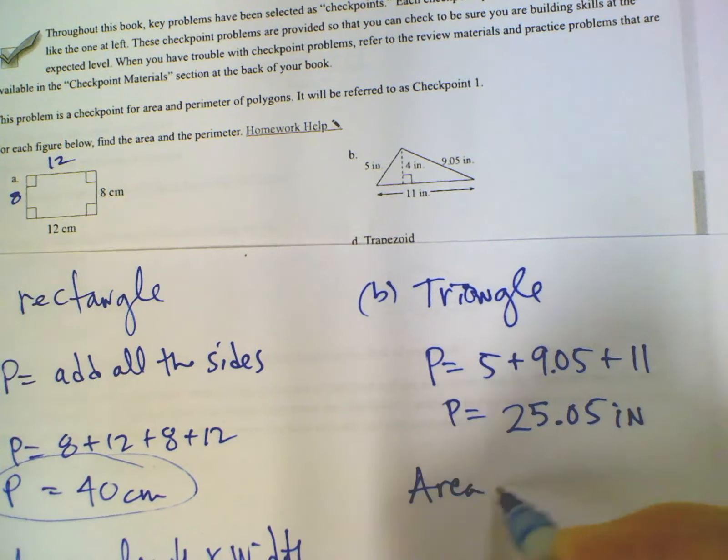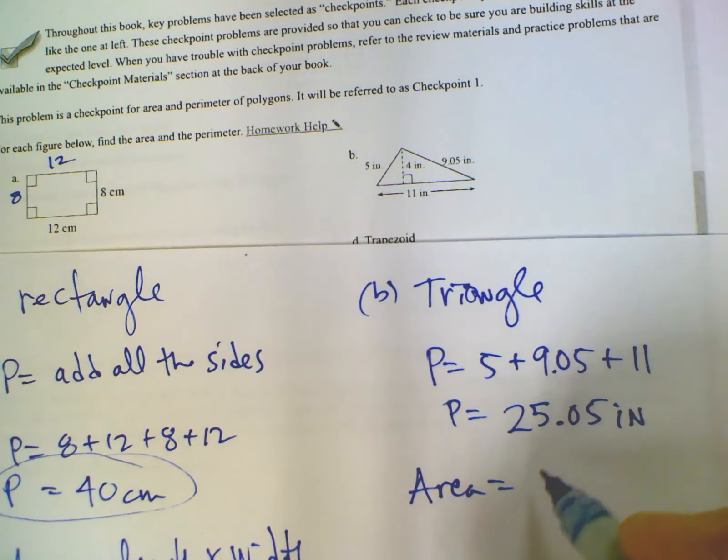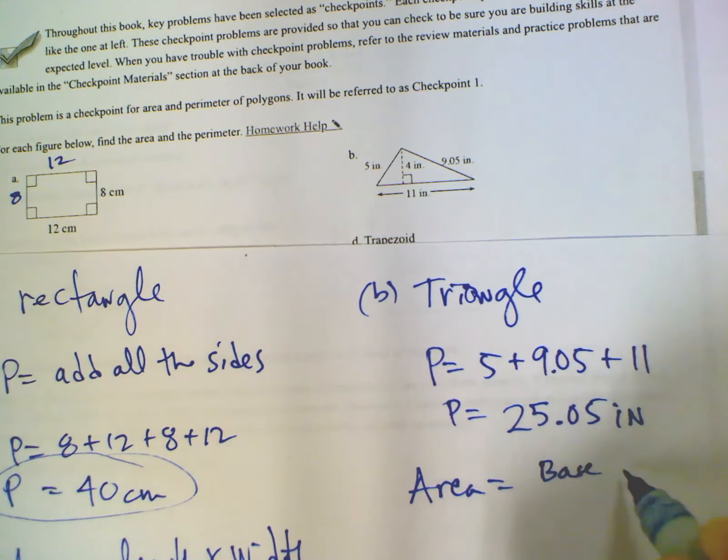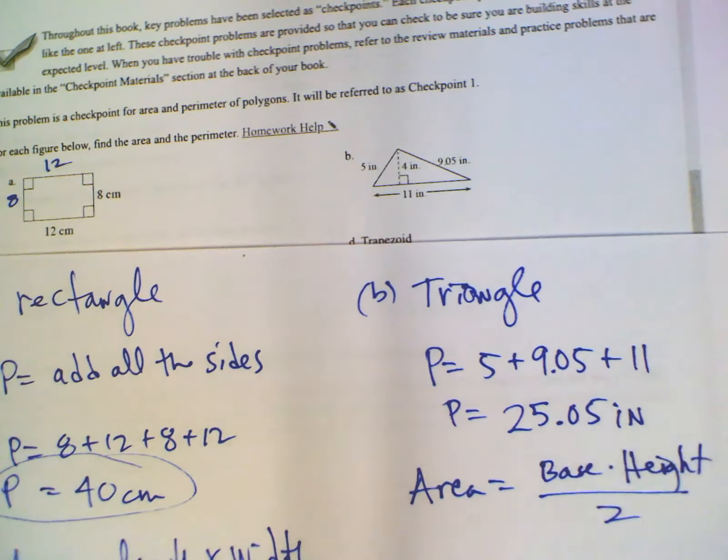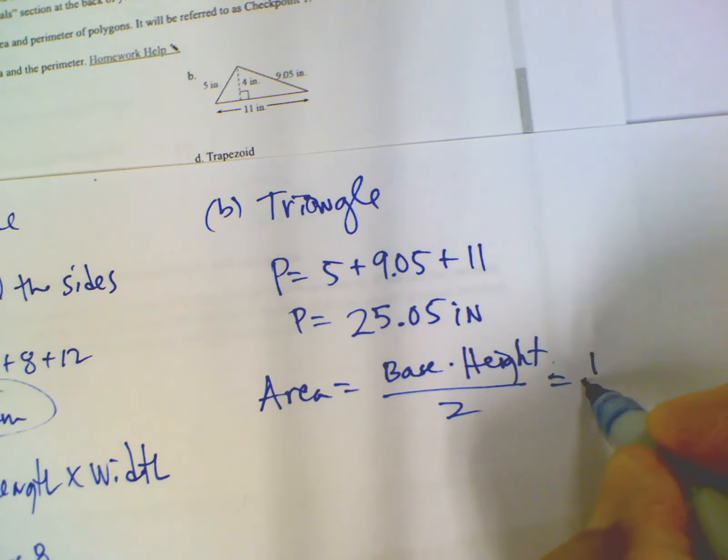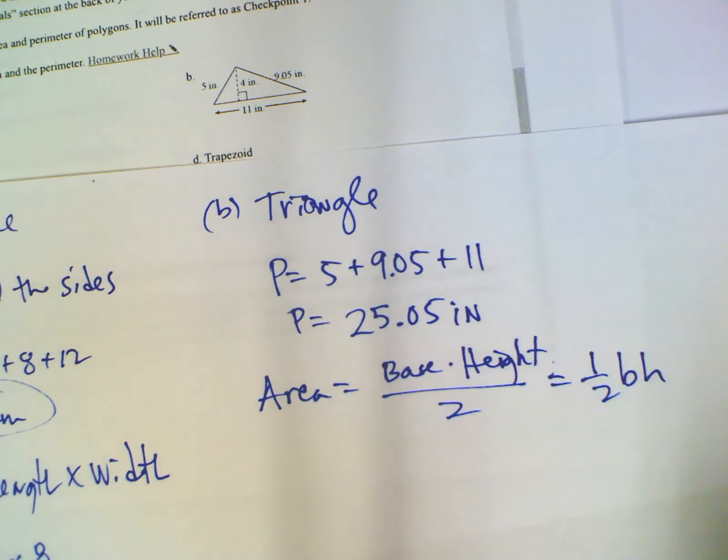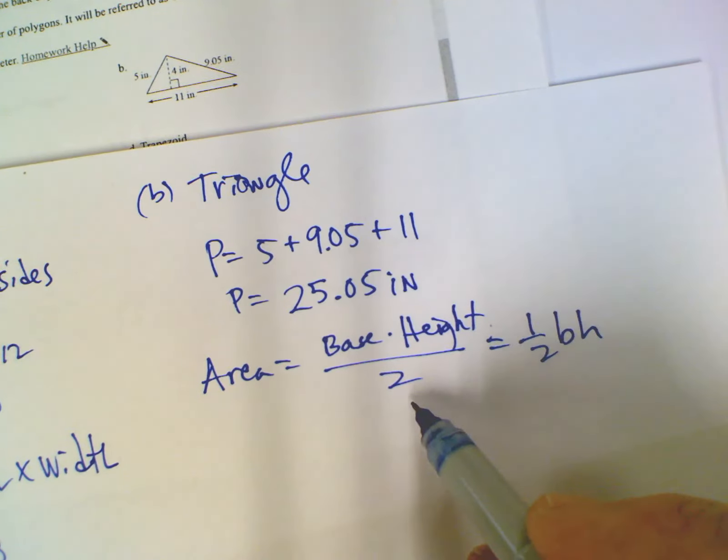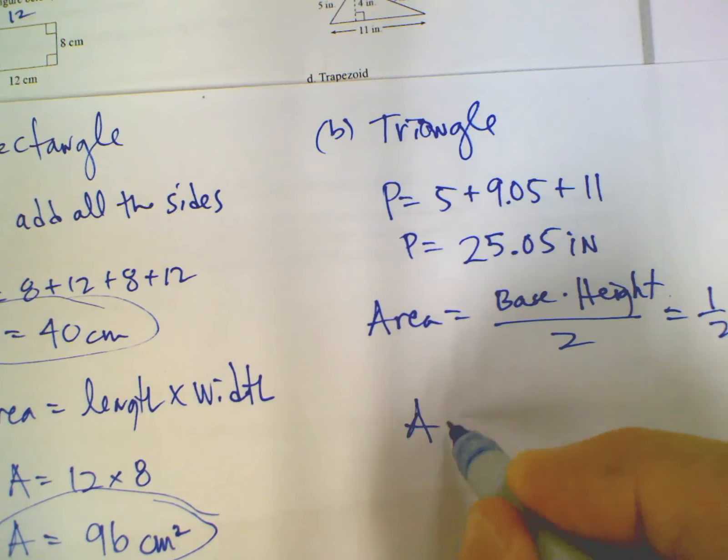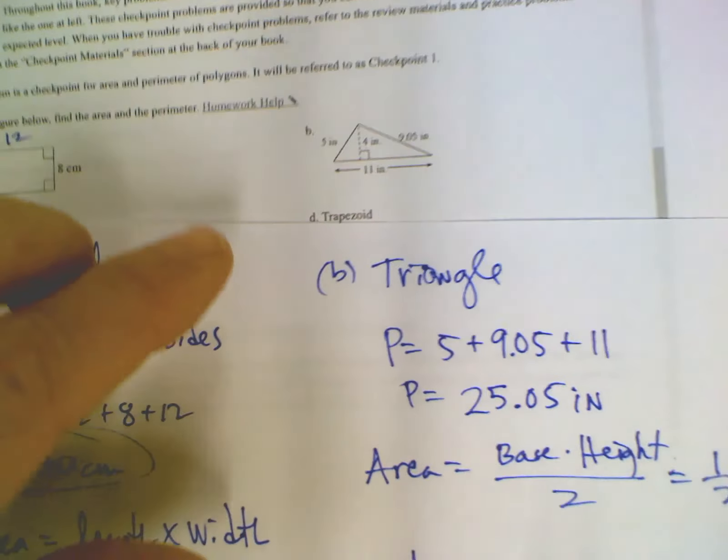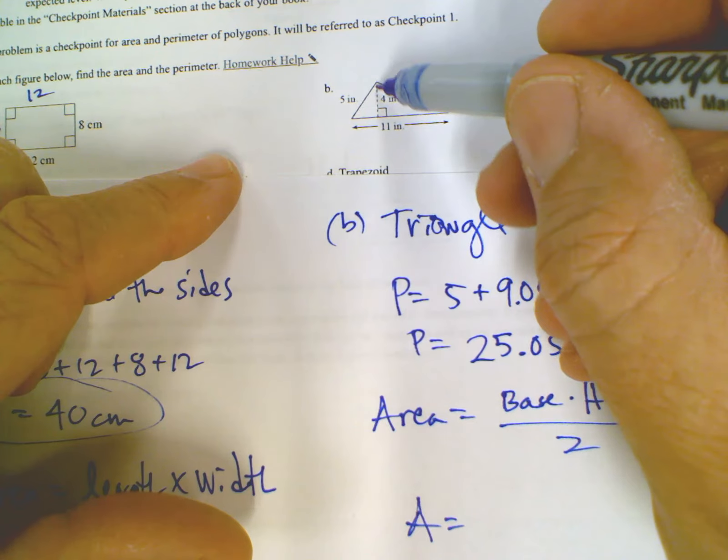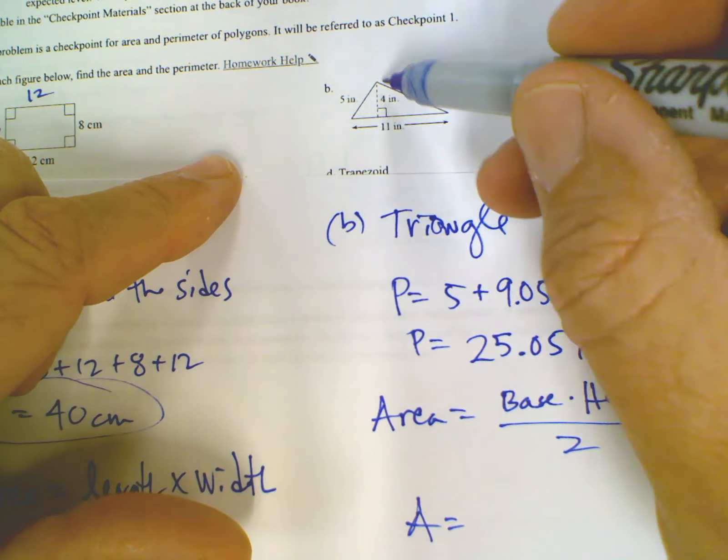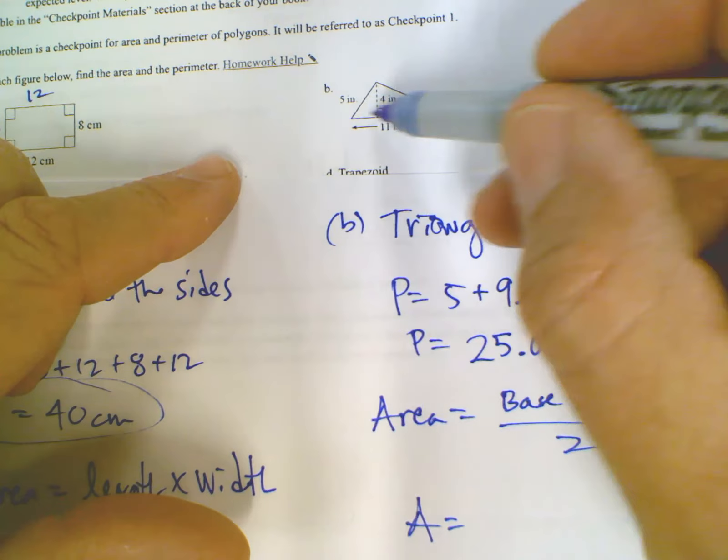And area. Area of a triangle is the base times the height, all divided by 2. Or some people write it shorthand to say 1 half base times height. Either way. If you look at base times height divided by 2, it's the same thing as saying 1 half base times height. So in this case, my area for this problem, my base and my height. How do you know which one's the base, which one's the height? The base and the height have to be connected with a 90 degree angle, perpendicular.